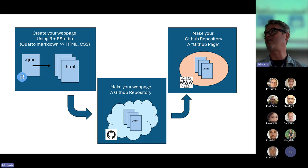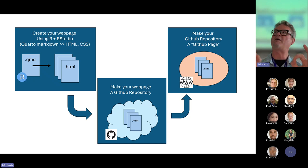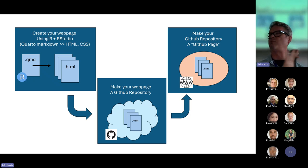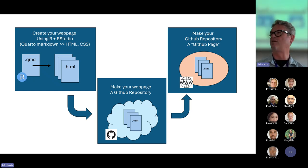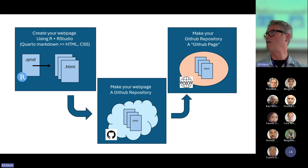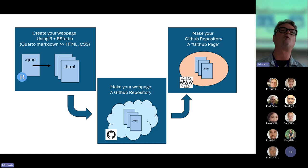CSS — cascading style sheets — is a language that specifies a template for how pages look, so there's consistency across a set of pages. That in itself is a language; it's really fiddly to use, but it's all automatically created by Quarto. JavaScript is just another computing language that does fancier stuff on webpages. All of that will be created automatically and you won't have to do any of it.